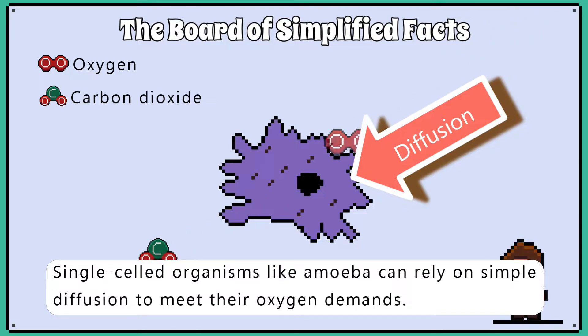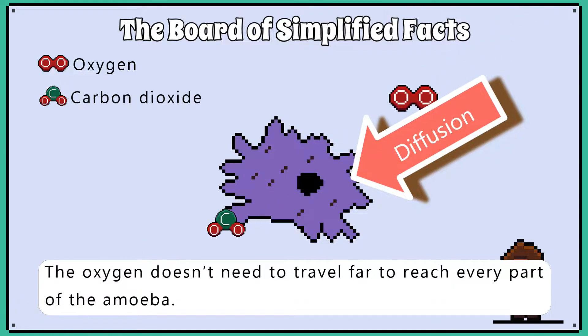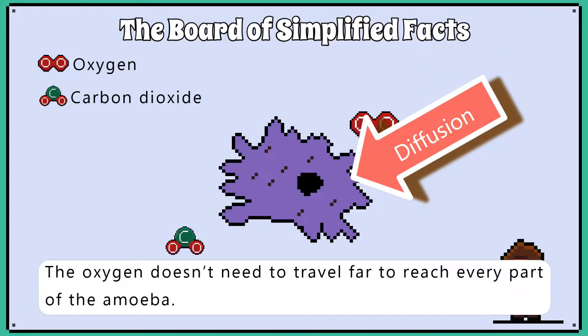Single-celled organisms, like amoeba, can rely on simple diffusion to meet their oxygen demands. The oxygen doesn't need to travel far to reach every part of the amoeba.